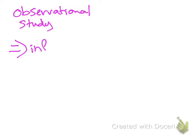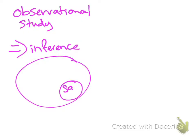So if I have an observational study, that means that I can make some kind of inference. I can suggest that from my sample data, that I can suggest that what is happening in the population. So I can make an inference about it.